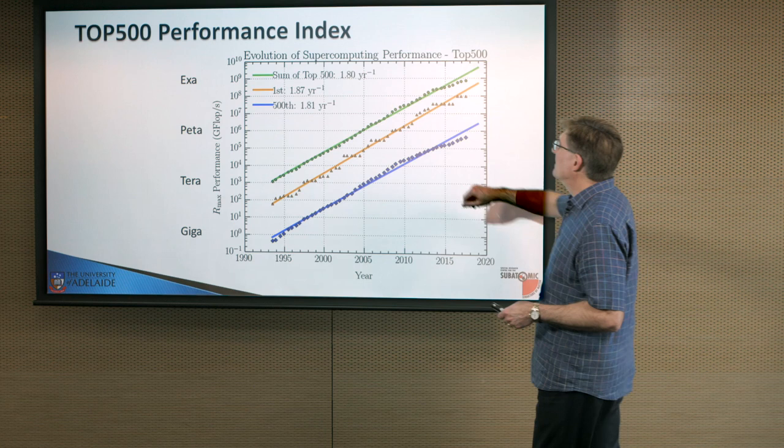Now, the rate of growth is particularly important. You're looking at, typically, 1.8 per year. That means that the speed of supercomputers is almost doubling every year.